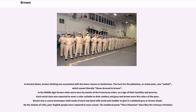In ancient Rome, brown clothing was associated with the lower classes or barbarians. The term for the plebeians, or urban poor, was 'piloti,' which literally meant 'those dressed in brown.' In the Middle Ages, brown robes were worn by monks of the Franciscan order as a sign of their humility and poverty. Each social class was expected to wear a color suitable to their station, and gray and brown were the colors of the poor. Russet was a coarse homespun cloth made of wool and dyed to give it a subdued gray or brown shade; by the Statute of 1363, poor English people were required to wear russet.